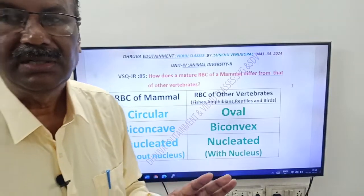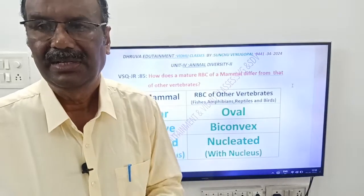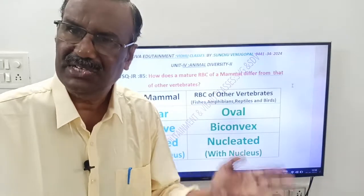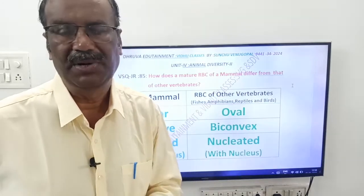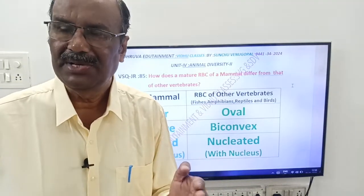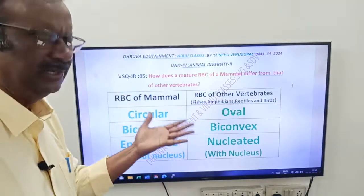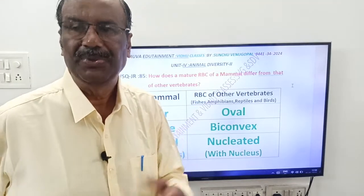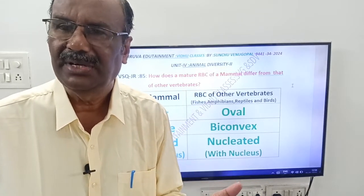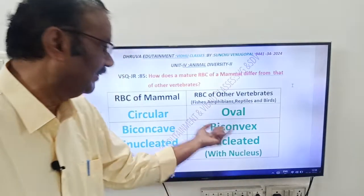Which vertebrate has no nucleus in their RBC? That is mammals. Name the vertebrates which have nucleus in their RBC — that is fishes, amphibians, reptiles, and birds. What is the shape of mammalian RBC? Circular and biconcave. What is the shape of RBC of other vertebrates, except mammals? They are oval and biconvex.